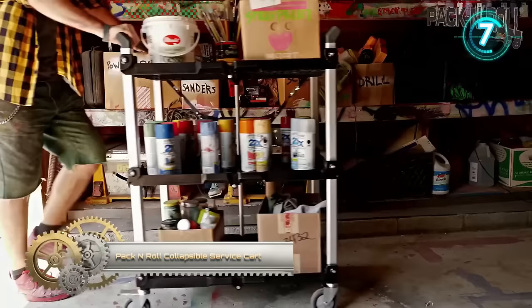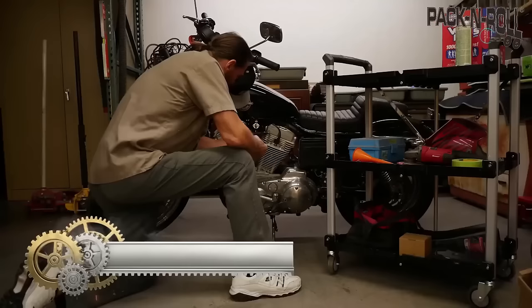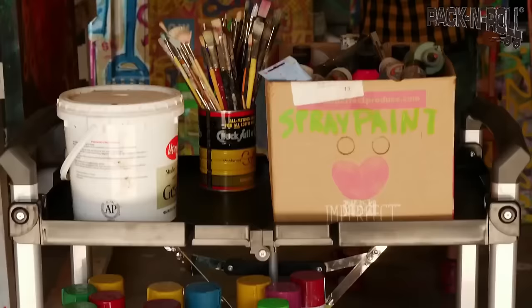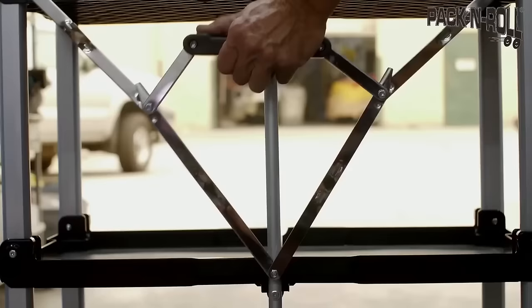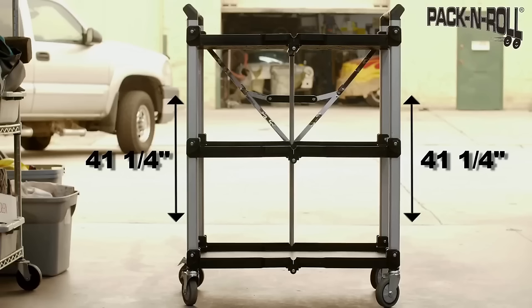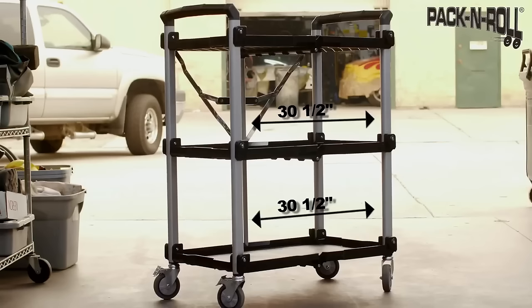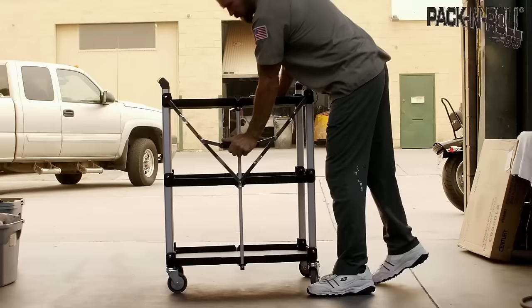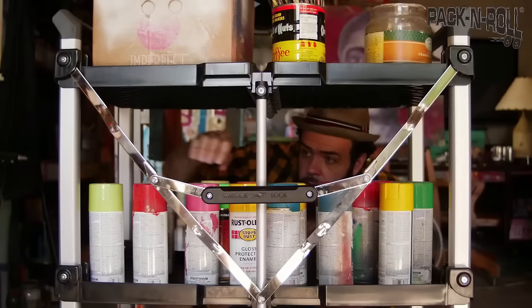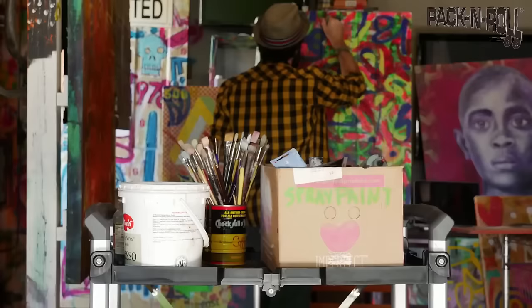The Pack-and-Roll Collapsible Service Cart is a versatile and portable tool suitable for various tasks, serving as a handy tool cart for job sites, workshops, or garages, a practical utility cart for groceries or laundry, and even a convenient serving cart for social gatherings. Crafted with a robust aluminum frame, it boasts three shelves with a combined weight capacity of 150 pounds, while its rubber swivel wheels ensure smooth maneuverability, even on uneven terrain. What sets it apart is its collapsible design, allowing for easy storage and transportation in compact spaces like closets, garages, or vehicles.